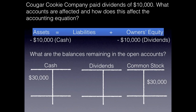What are the balances remaining in the open accounts? I've carried forward the balance from the prior problem: a debit balance in cash of $30,000 and a credit balance of $30,000 in common stock. Now cash is going down by $10,000 — that's a credit, because assets decrease with credits. That leaves a balance in our cash account of $20,000. I put the balance on the debit side because debits are higher than credits; debits minus credits gives me an ending balance of $20,000.